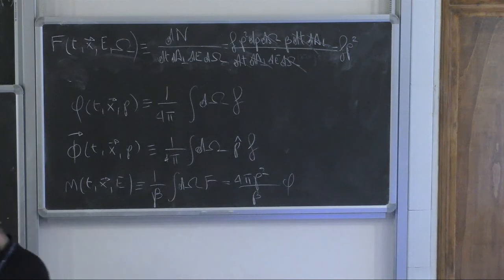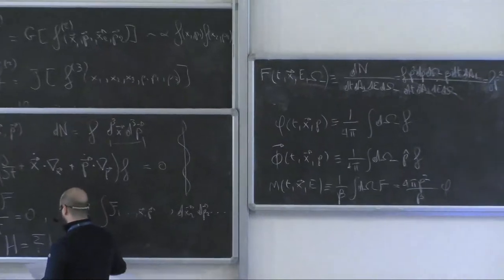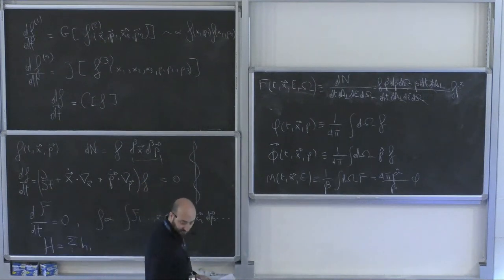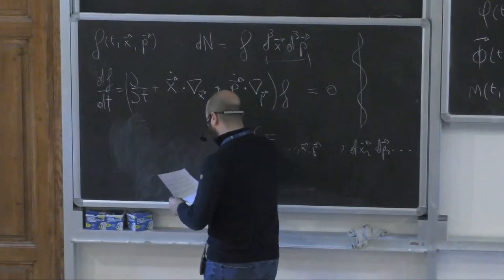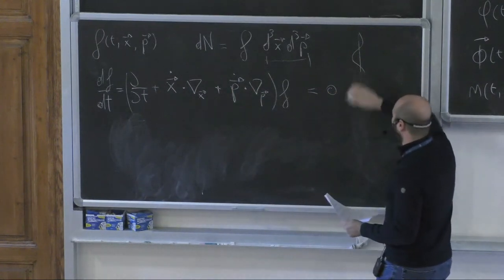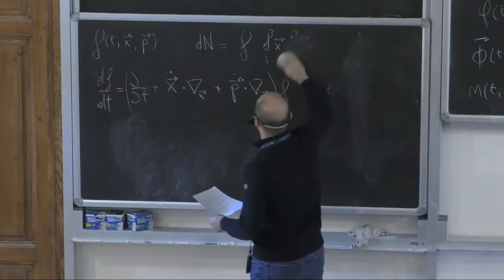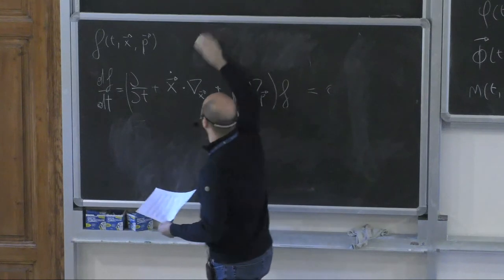The next point is to make more concrete this Vlasov equation for the problem at hand, which involves cosmic rays. In particular, we want to consider evolution under a magnetostatic type of condition — we have an externally assigned field B(x) but not B(t) — and we want to know how the cosmic rays evolve.